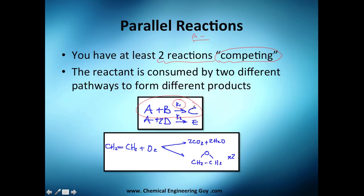You have A plus B with this rate constant forming C, and at the same time A may also react with two moles of D with a different rate constant to form E. Maybe you want C because it's high cost, and E will cost you money to separate. So you want to maximize C and minimize E.